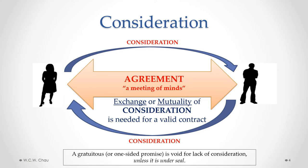In other words, if we have just a one-sided promise or a gratuitous promise, where one party is making a promise to the other and the other party is not providing anything in exchange, that promise is void for lack of consideration — it's not a valid contract. However, there is one exception: if that gratuitous promise is made under seal, it is a valid contract. We'll talk further about what a seal is later on in this module.